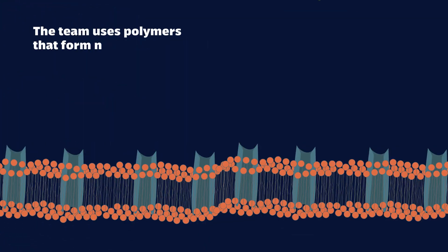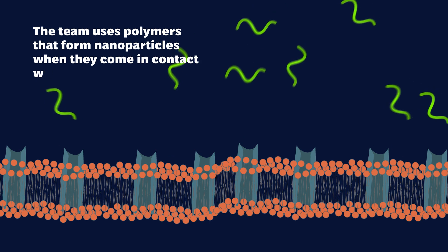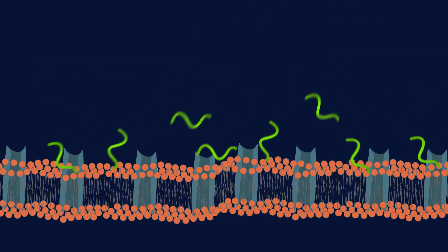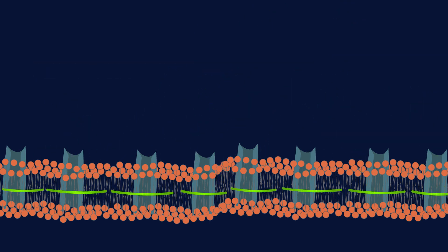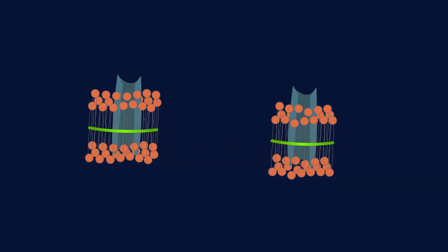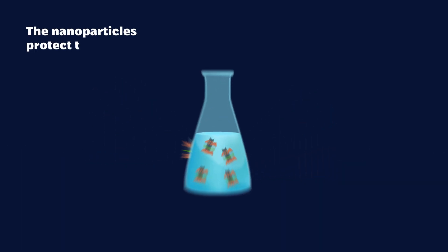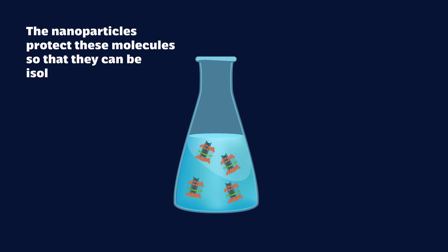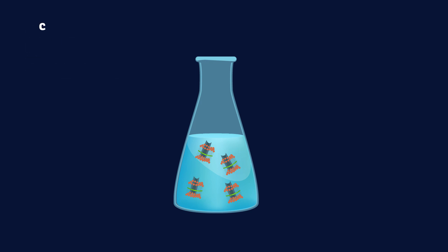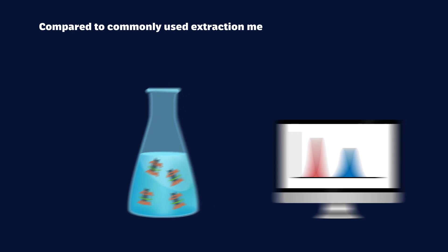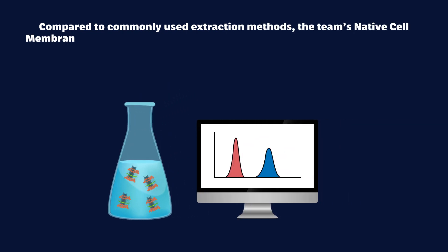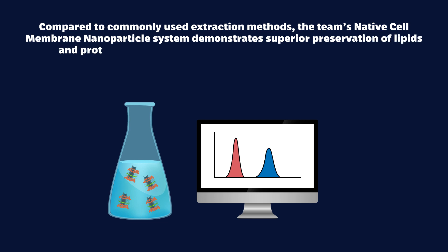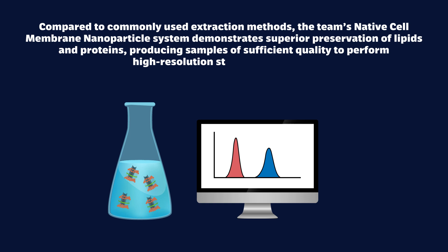In this technique, the team uses polymers that form nanoparticles when they come in contact with cell membranes. As these nanoparticles form, membrane proteins and lipids become encapsulated within them. The nanoparticles protect these molecules so that they can be isolated and analyzed. Compared to commonly used extraction methods, the team's native cell membrane nanoparticle system demonstrates superior preservation of lipids and proteins, producing samples of sufficient quality to perform high-resolution structural analysis.